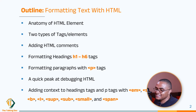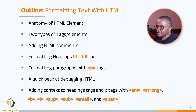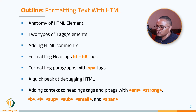Welcome to Talking Dev. Here is what we are going to cover: number one, the anatomy of an HTML element; number two, two types of HTML tags or elements; number three, adding HTML comments; number four, formatting headings from h1 to h6; number five, formatting paragraphs using p tags; number six, debugging HTML using Google Chrome; and number seven, how to add context to headings and paragraph tags using tags like em, strong, bold, italics, superscript, subscript, small, and span.